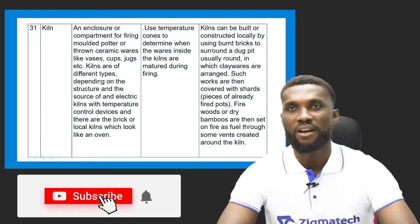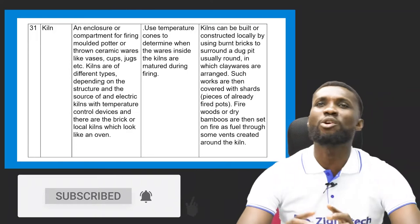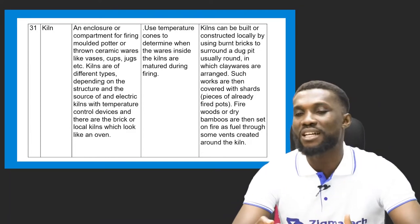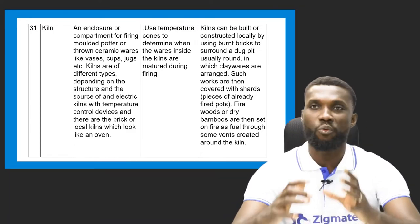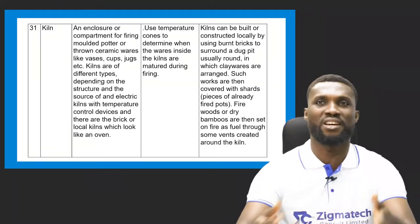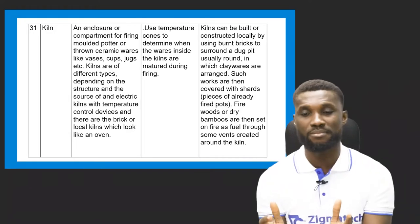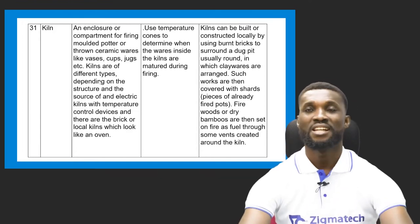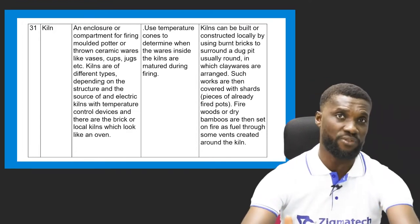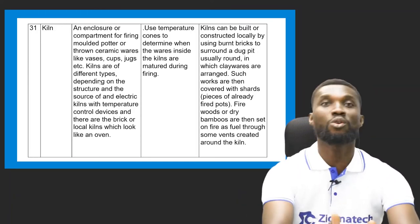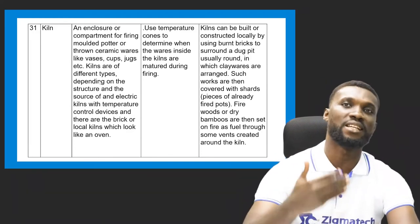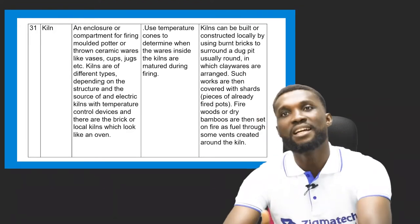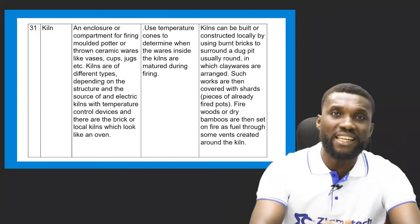The next thing we'll talk about is the kiln. The kiln is an enclosed compartment for firing wood-molded pottery. After throwing the ceramic ware, after building the ware — making flower vases, jugs, mugs, etc. — you keep them to dry and then send them into the kiln for the final firing. We have two stages of firing: the first stage, known as biscuit firing, and the final firing.